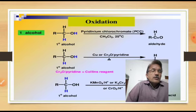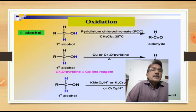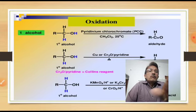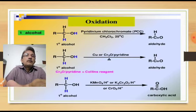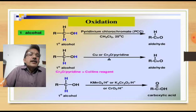To stop the oxidation reaction at the aldehyde stage, mild oxidizing agents are used. Acidified potassium dichromate and alkaline potassium permanganate are strong oxidizing agents, whereas pyridinium chlorochromate (PCC) in the presence of dichloromethane is a mild oxidizing agent. Primary alcohol treated with copper or chromium trioxide (CrO₃) in the presence of pyridine gives an aldehyde via removal of two hydrogen atoms.